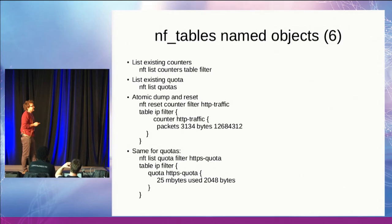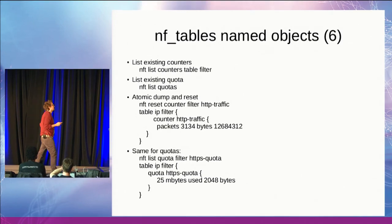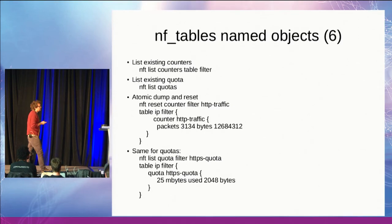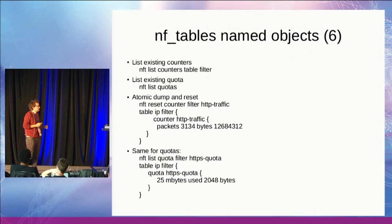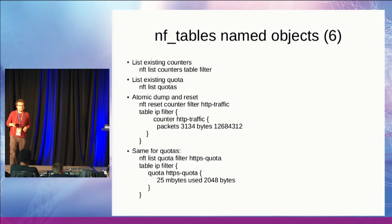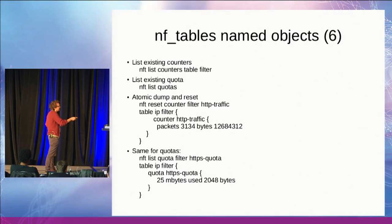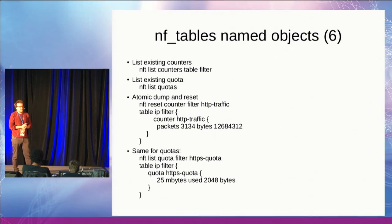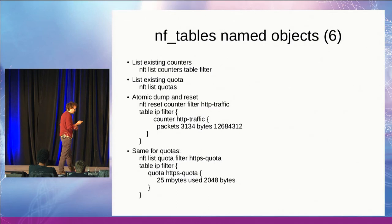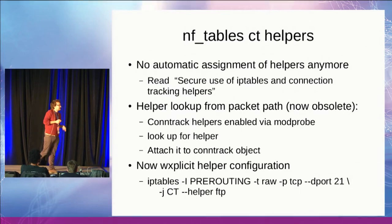We can obviously list existing counters, existing quotas, and any object type implemented on this infrastructure. We have atomic dump and reset — when you call 'nft reset', it lists what is currently in the kernel and resets it atomically. Same for quotas: you can represent the amount of quota used, which is good for accountability purposes.